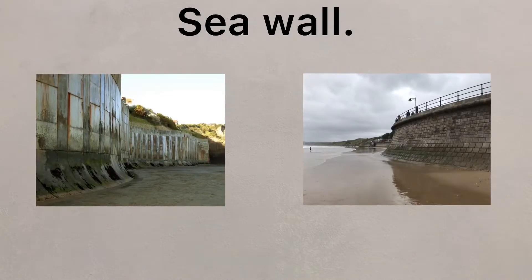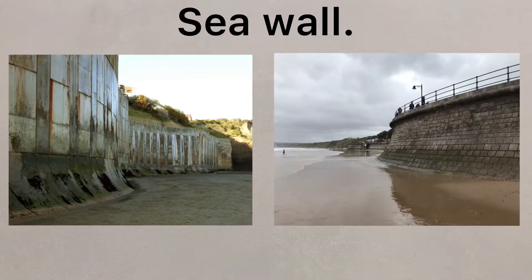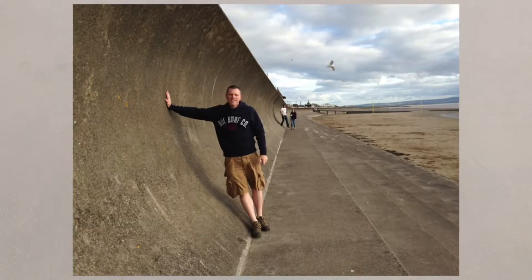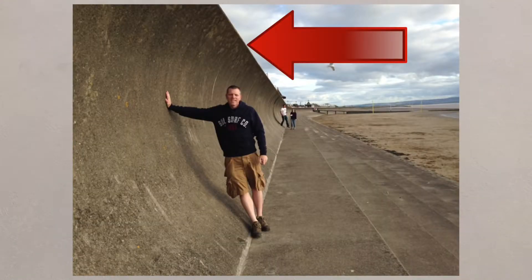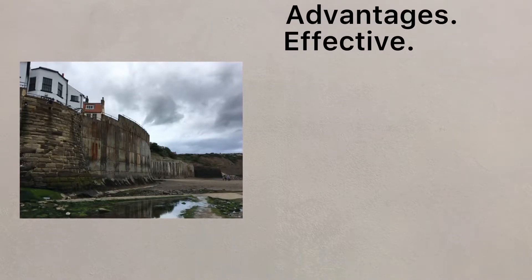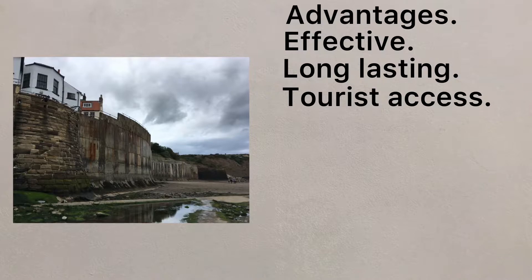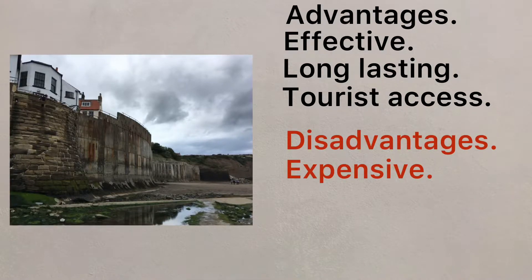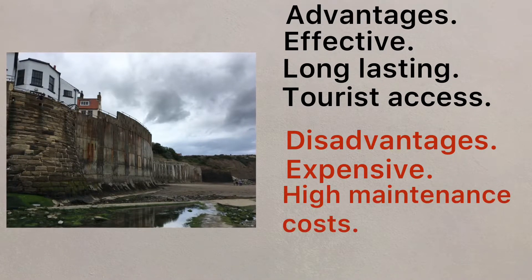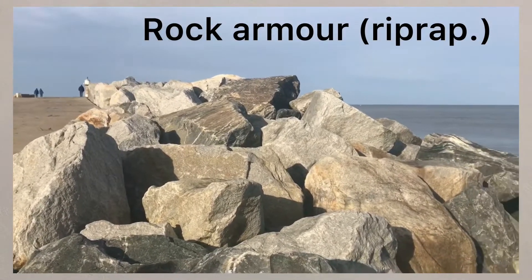The most expensive of these is a sea wall. A sea wall is, as it sounds, a wall built against the coastline at the foot of cliffs or top of the beach. The top is often curved to reflect the waves back into the sea to disrupt the next wave. The advantages are that it's very effective in stopping the sea's erosive effect on the coast and that it can provide a path for people to walk along. It is however very expensive and can have high maintenance costs, and can look unnatural and obtrusive.